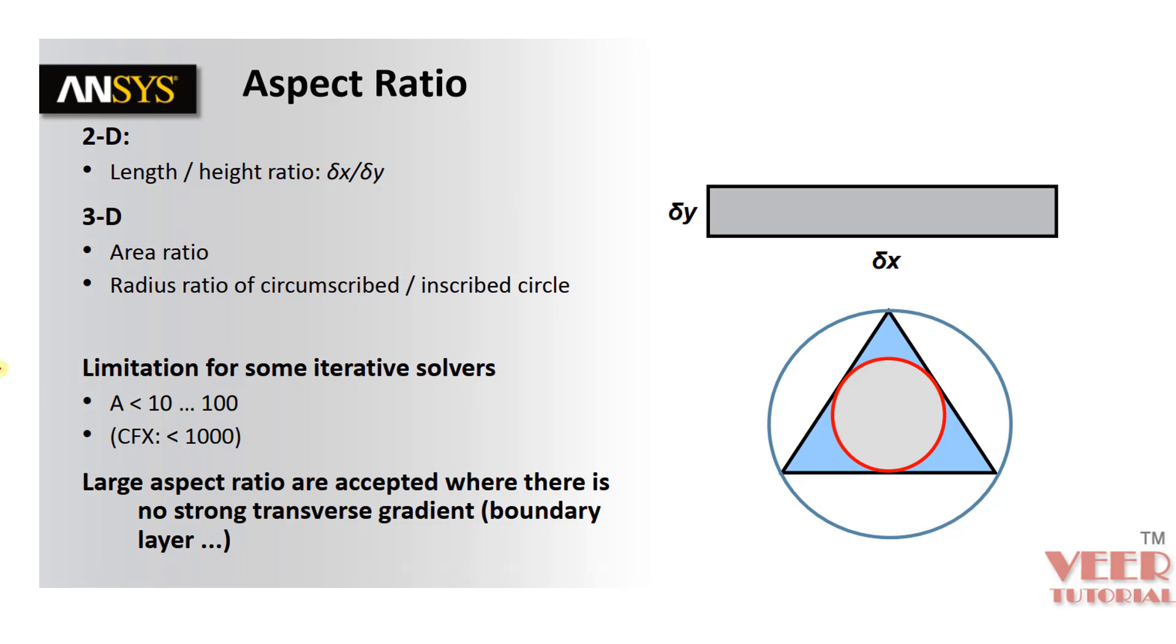So aspect ratio is basically length to height in case of 2D. Here we have 2D. So that is, it is the ratio of length to height. In case of 3D, it is calculated using area ratio and ratio of circumscribed to inscribed circle. So circumscribed is whenever a geometry is inside a circle, this is circumscribed. Whenever a circle is inside the geometry, this is inscribed. So area of this type of circle is calculated for the element quality.